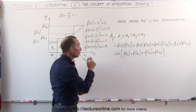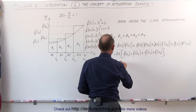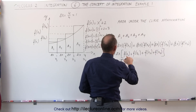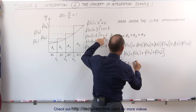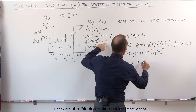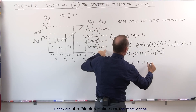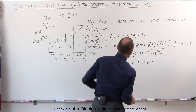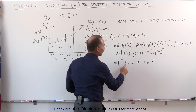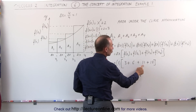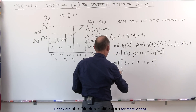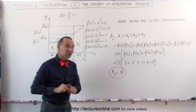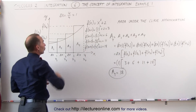Now we know the width and heights, so let's plug that in. This equals 1 times the height of the first rectangle, which is 3, plus the height of the second rectangle, which is 6, plus the height of the third rectangle, 11, plus the height of the fourth rectangle, 18. Adding those together: 3 + 6 = 9, + 11 = 20, + 18 = 38. The total area of all four rectangles equals 38, which is approximately equal to the area underneath the curve.